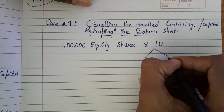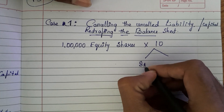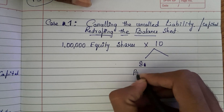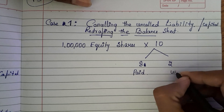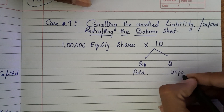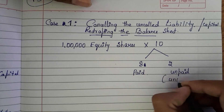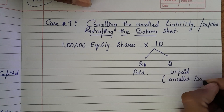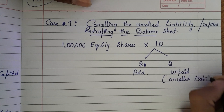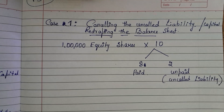Now, rupees 10 is the face value and rupees 8 is paid, so rupees 2 is unpaid — that is the uncalled liability, also called uncalled capital. Let us pass the journal entry for cancellation of this uncalled liability.